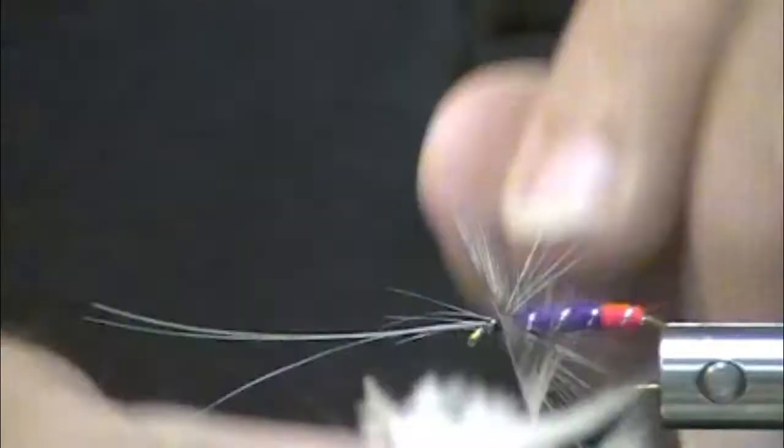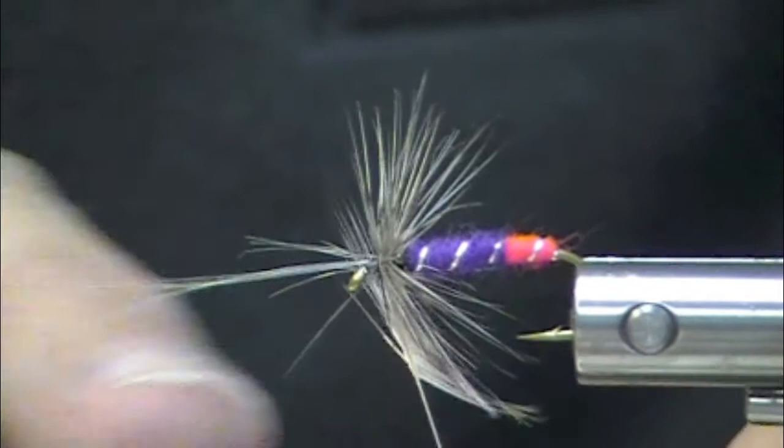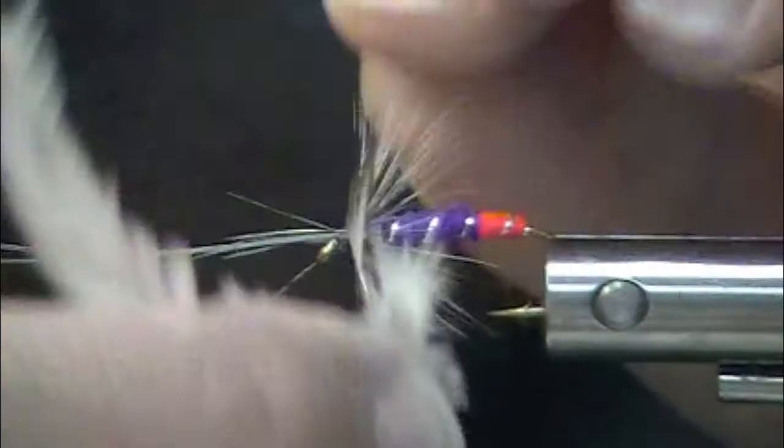As I'm winding this, I will let you know every once in a while you'll find one of these hackles. It won't wind on the way you want it. It's because there's a twist in the stem. When you find that, just give up on it quickly. Use a different part of the same feather or use a different feather.